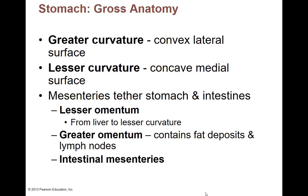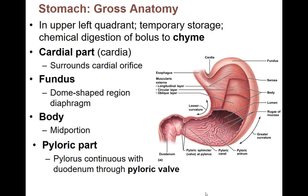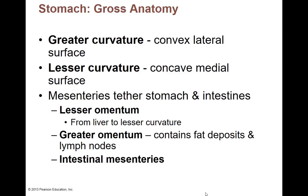A couple other parts: the outer part we call the greater curvature, and the inner part — the smaller one — we call the lesser curvature. It also has two kinds of fatty tissues coming off of those curvatures. One's called the lesser omentum, one's called the greater omentum, and it depends on which curvature they're attached to.